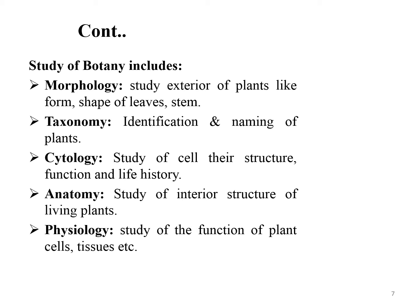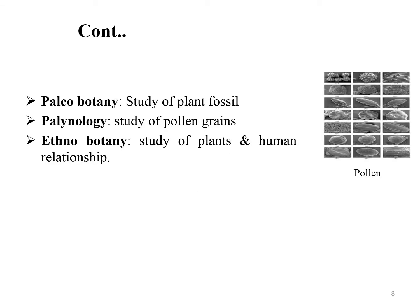Let's discuss some branches of botany. Morphology is the study of the form and shape of leaves, stem, and roots. Taxonomy is the identification and naming of plants. Cytology is the study of cells and their structure, function, and life history. Anatomy is the study of the interior structure of living plants. Physiology is the study of the function of plant cells and tissue. The study of plant fossils is called paleobotany. Palynology is the study of pollens. Ethnobotany is the study of plants and human relationships, including use of food, clothing, medicine, diet, construction, cosmetics, and more.